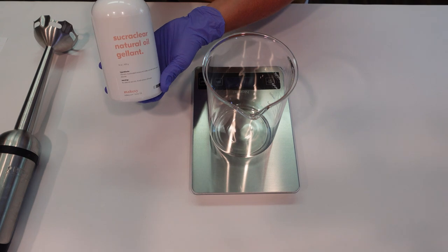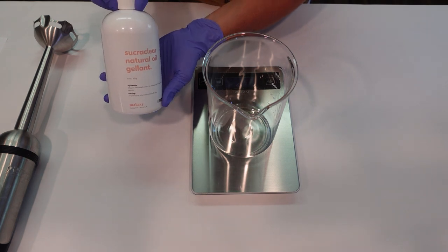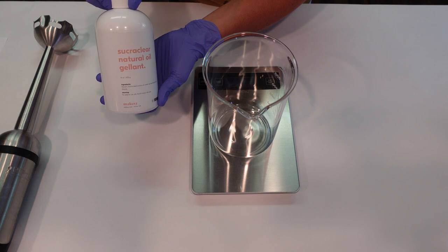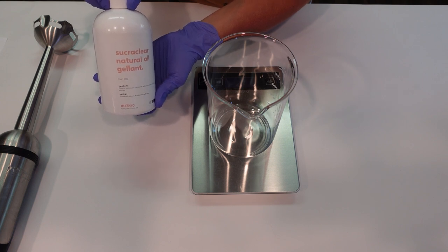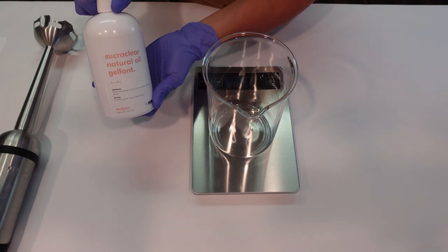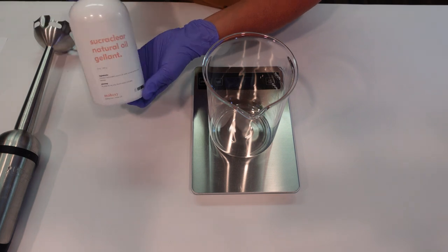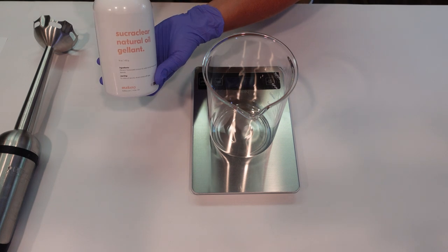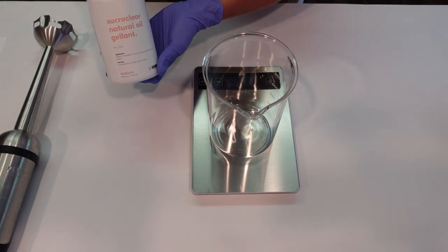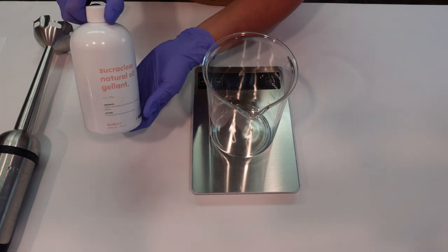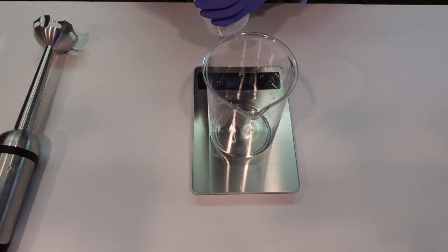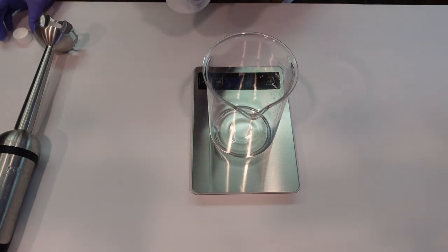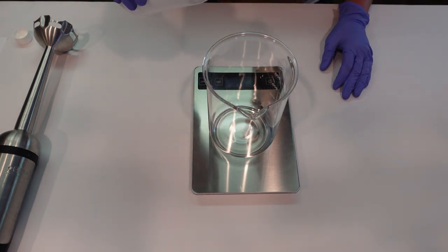I am going to be using Super Clear again as my Phase A ingredient. You guys have seen me use this recently in lots of different formulas including sugar scrubs, lip scrubs, foaming scrubs, foaming body washes, all kinds of things. This is a natural oil gelling agent. You can get it at MakeSy.com. I have an affiliate link below. We're going to go ahead and weigh off our Super Clear as our Phase A ingredient.